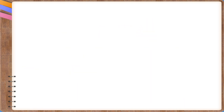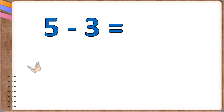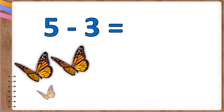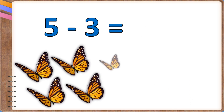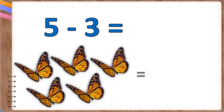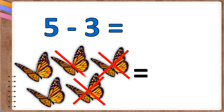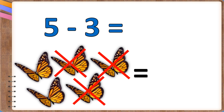5 minus 3. There were five butterflies sitting on a tree. Three of them flew away. Now there are only two.